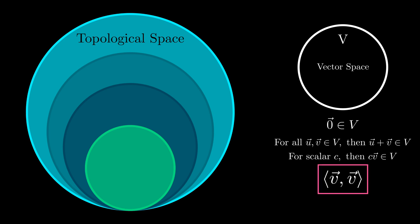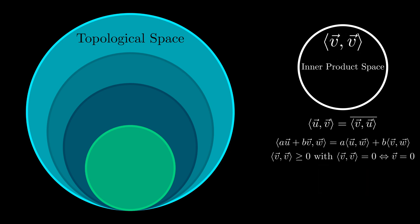Namely, that of an inner product, which is a function satisfying these criteria. Once this occurs, the vector space turns into a new space, an inner product space.